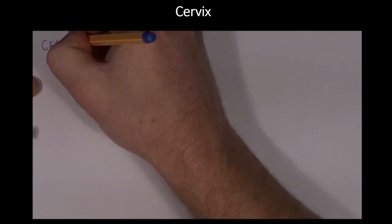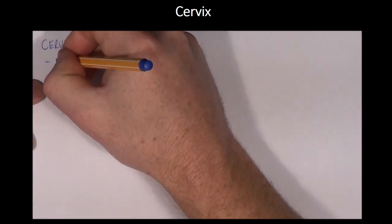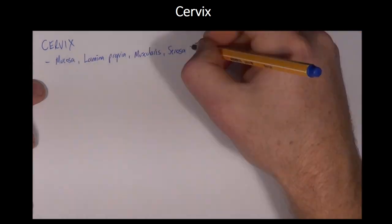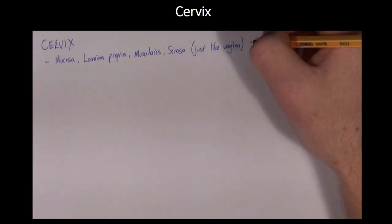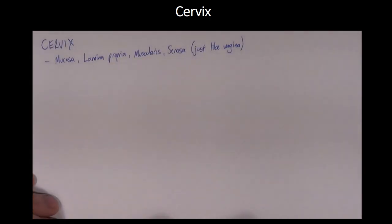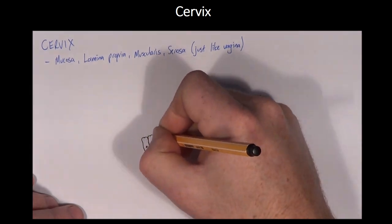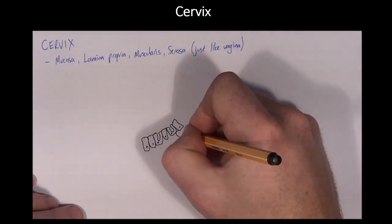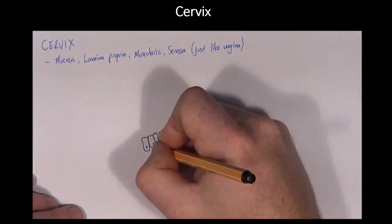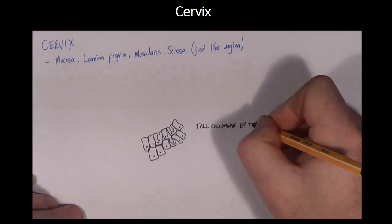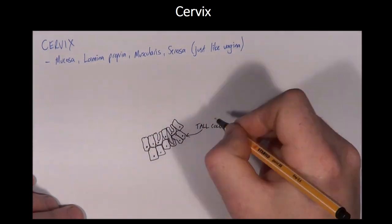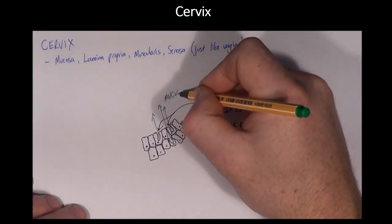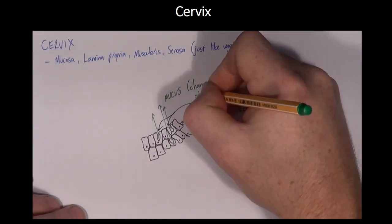The cervix of the cow has a mucosa with a tall columnar epithelium and goblet cells that secrete mucus. The composition of this mucus is dependent on circulating hormones. As seen in the video on gross anatomy of the cervix and uterus, diestrus causes the secretion of a thick yellow mucus plug, while estrus induces secretion of a less viscous, clearer mucus. The lamina propria of the cervix is formed of dense connective tissue, particularly in cows and in sheep.